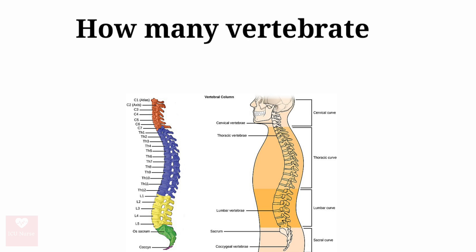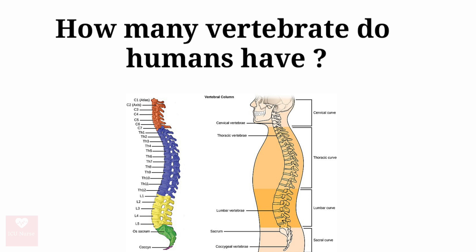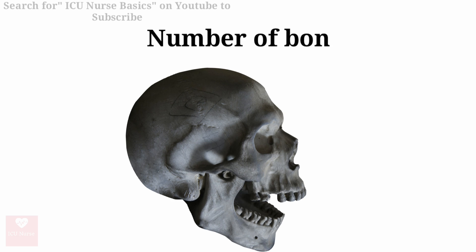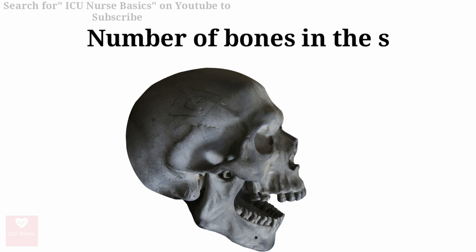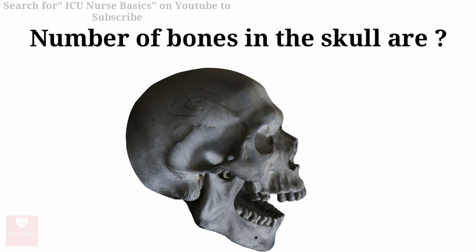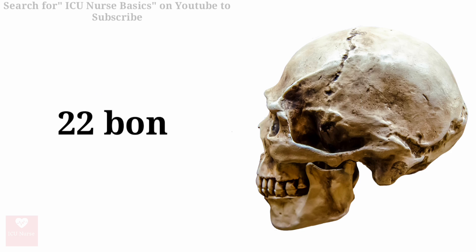How many vertebrae do humans have? Humans have 33 vertebrae. The number of bones in the skull are 22 bones.